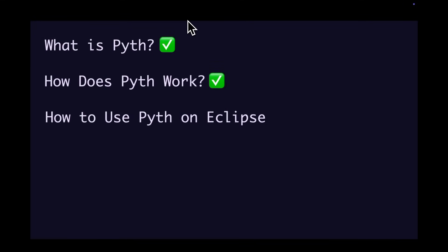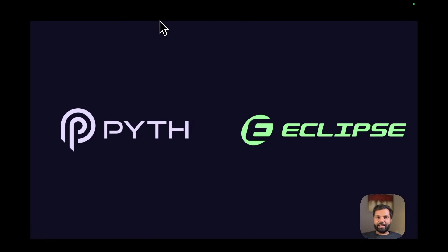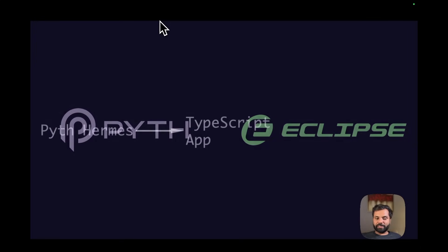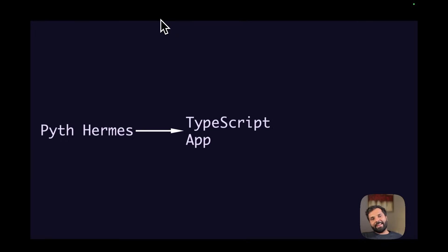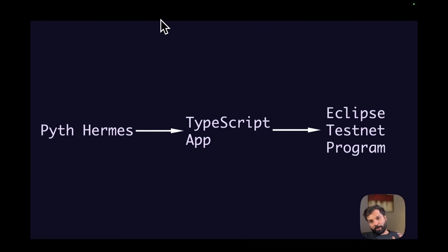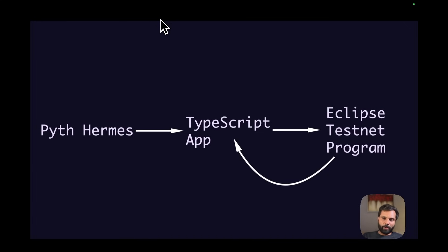Now let's see how we can use Pyth on Eclipse testnet, which is an SVM-based — Solana Virtual Machine-based — Ethereum Layer 2. Our app will have three major components: first is Pyth Hermes, a web-based API used to get price feed data from the Pyth network. We will get price feed data for ETH/USD in our TypeScript application and send it to our smart contract deployed on Eclipse testnet. The program will then decide if the banana is ripe or not and send that information back to our TypeScript application.